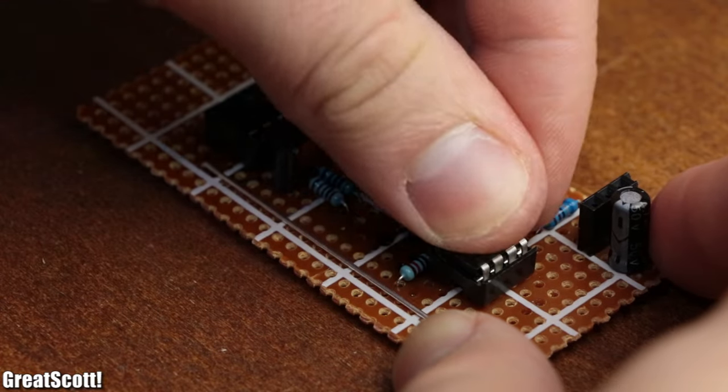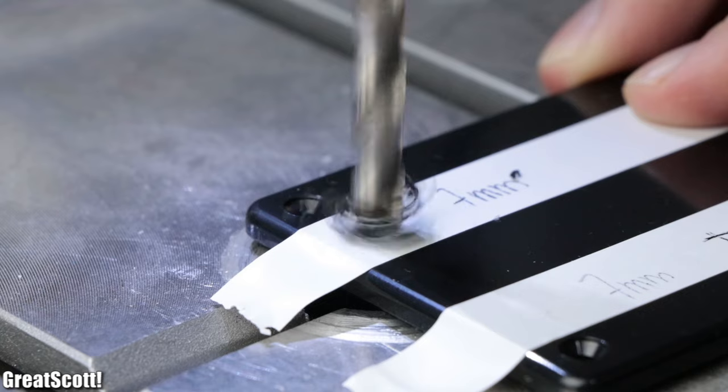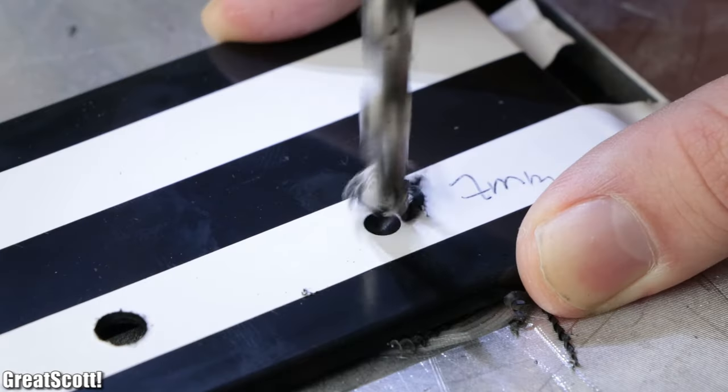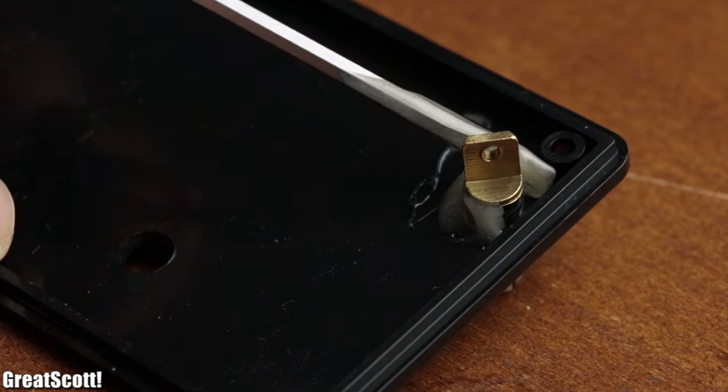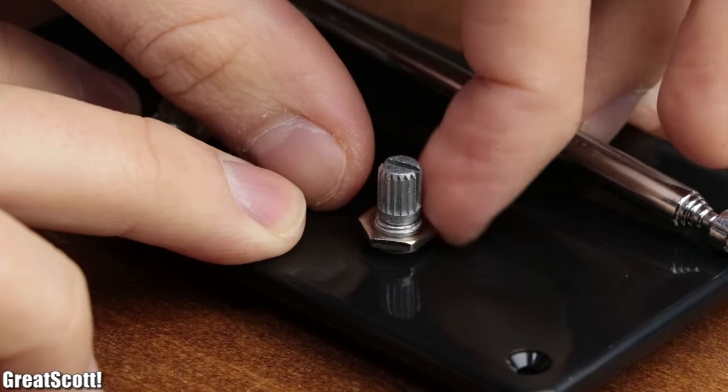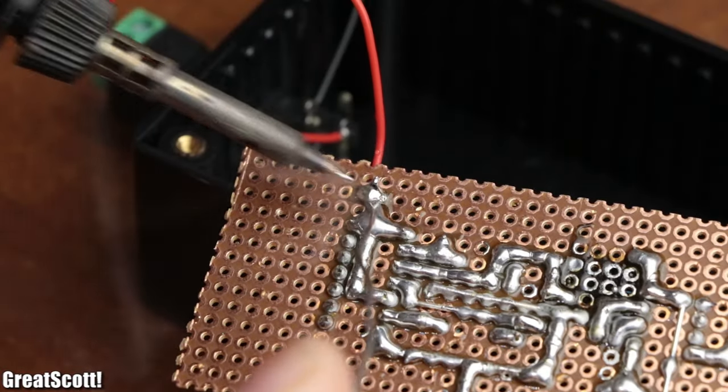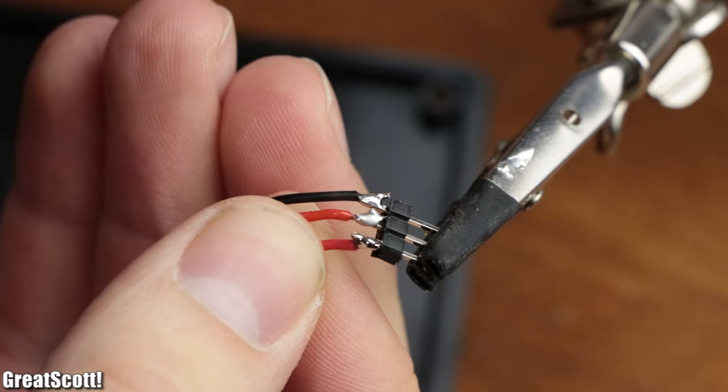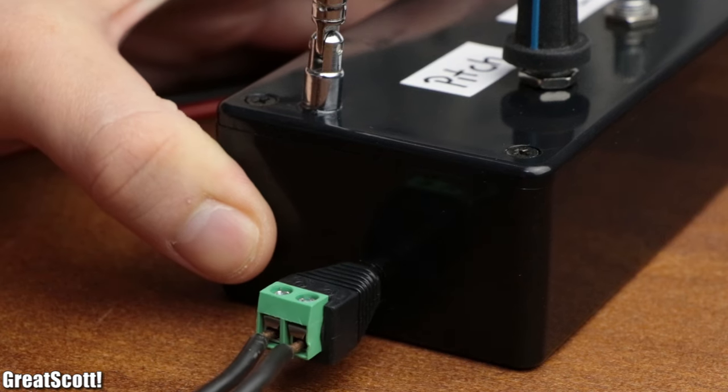Once the perfboard circuit was complete, I got myself a decent-looking enclosure, drilled holes for the antenna, two potentiometers, audio jack, and power jack, secured those components in place either with a bit of two-component adhesive or the corresponding nut, connected the external components with short pieces of wire and partly with male headers to the perfboard, closed it all up, and finally gave the system power.